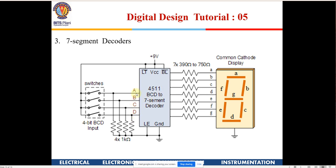The 4511 IC takes 4 inputs and drives a common cathode display. Common cathode means the LCD has a single ground terminal which you connect to ground, and individual terminals A through G. You connect each from the IC directly. Since the 4511 uses a 9V supply, the output is also 9V; for that reason you must use a resistance. For a TTL gate with 5V we use 200–220 ohms; for a 9V supply use 390–750 ohms, otherwise the LED will burn.